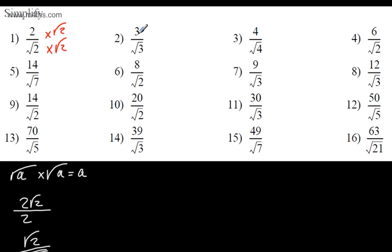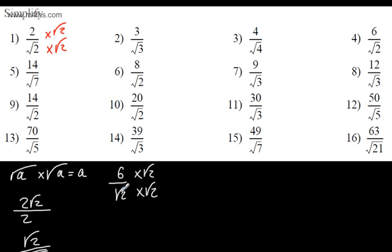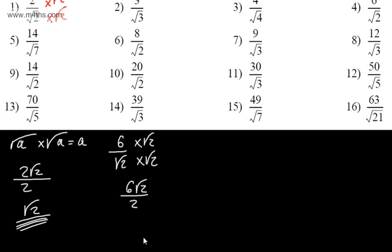Similarly, 3 over root 3 gives us just root 3. Let's try one that's slightly different: 6 over the root of 2. I multiply the numerator and denominator by root 2. 6 times root 2 gives 6 root 2, and root 2 times root 2 gives 2. So I have 6 root 2 over 2, and the 6 and 2 cancel to give 3 root 2. That's our answer.